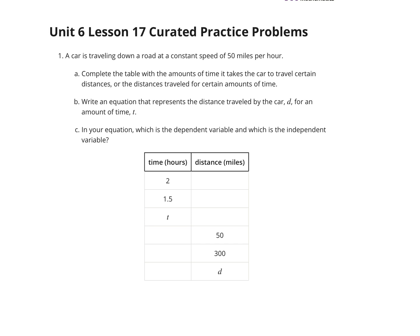Question 1. A car is traveling down a road at a constant speed of 50 miles per hour. Complete the tables with the amount of time it takes the car to travel certain distances, where the distance is traveled for a certain amount of time. 2 hours, if we're going 50 miles per hour, 2 times 50 gets us 100 miles. 1 and a half times 50 would get us 75. We're taking our 50 miles per hour and multiplying by our time t to get our distance.